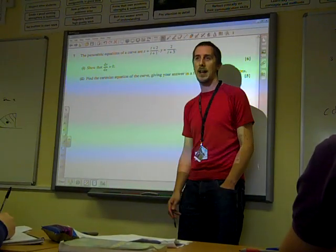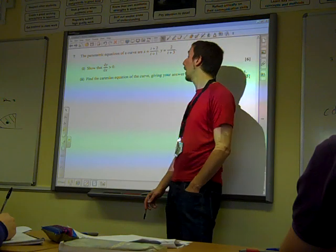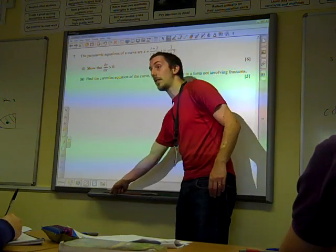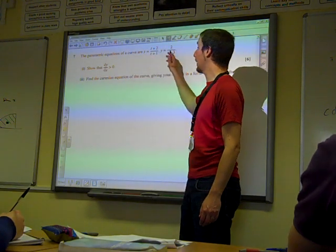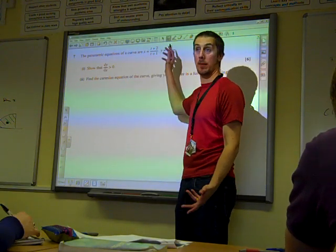Show that dy by dx is bigger than zero to start with. We remember how we do this. To find dy by dx, we need to differentiate them in terms of what they're written in at the moment.